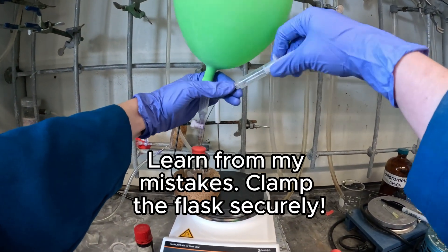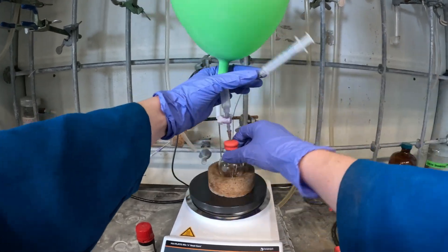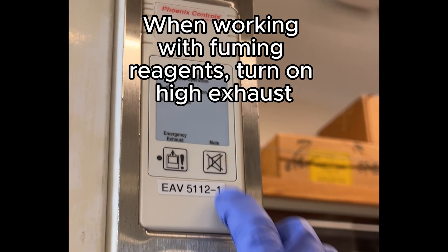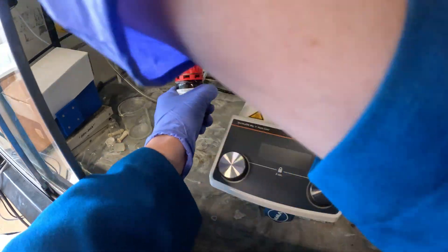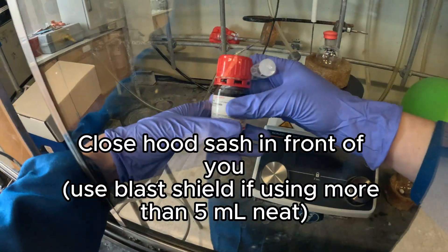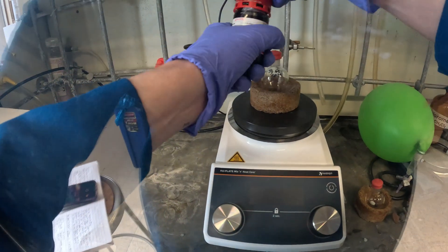Please learn from my mistakes and clamp the flask down so it doesn't drop and fall over and break. When you're working with fuming reagents, turn on the high exhaust, especially do this in the hood. If you're using more than 5 mils, you should use a blast shield.